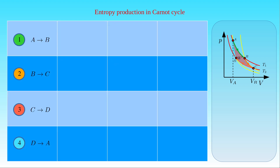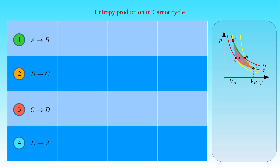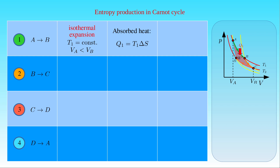The four steps of the Carnot cycle transform the system from state A to B, B to C, C to D, and D to A respectively. The first step is an isothermal expansion of the working substance at temperature T1, where the initial volume V_A is smaller than the final volume V_B. The heat Q1 absorbed during expansion is given by T1 times the change in entropy ΔS during the isothermal expansion. The change in entropy equals M times R_S times the natural logarithm of V_B over V_A, so the change in entropy is positive in the first step, involving entropy production.